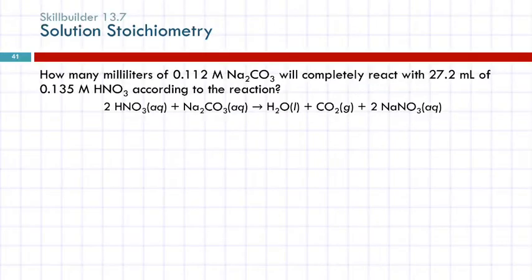Let's do an example: how many milliliters of 0.112 molar sodium carbonate will completely react with 27.2 milliliters of 0.135 molar nitric acid, according to the reaction? We have a chemical equation and some numbers — use the equation to organize the numbers.